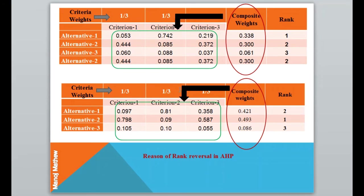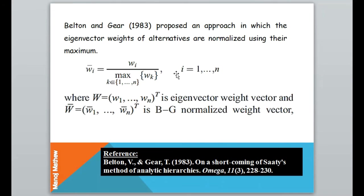Belton and Gear in 1983 proposed an approach in which the eigenvector weights of alternatives are normalized using their maximum value. These normalized weights are called BG normalized weights.